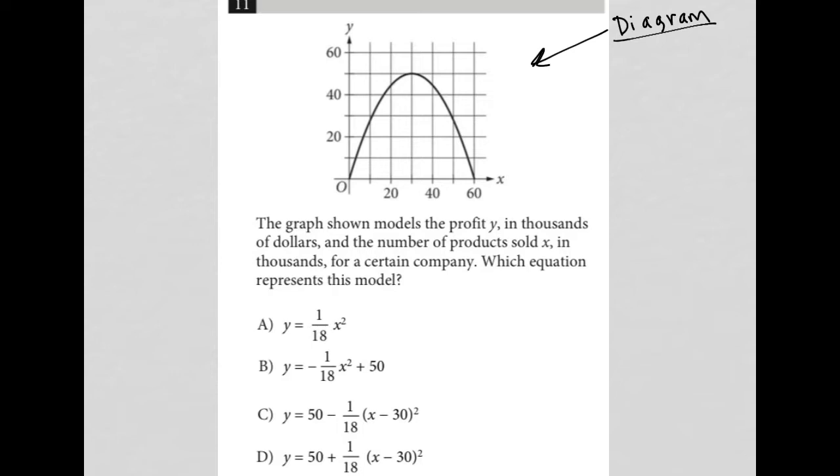The question says the graph shown models the profit Y in thousands of dollars. So we know that this is the profit axis and the number of products sold X in thousands for a certain company. So we know this is products also in thousands. Which equation represents this model?